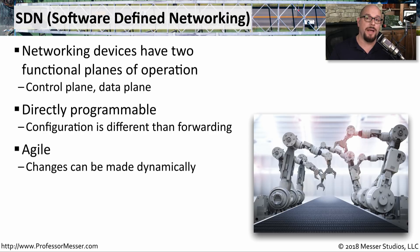SDNs are also agile, meaning we can make changes on the fly at any time. If an application flow suddenly got busier in one part of the network than another, the network can automatically and dynamically change itself to provide more capacity where it's needed.